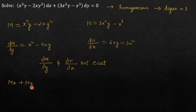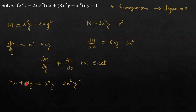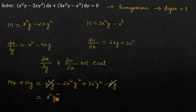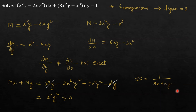For Rule 1, we first calculate mx + ny. Multiplying M by x gives x³y − 2x²y². Multiplying N by y gives 3x²y² − x³y. The x³y terms cancel, and after subtraction we get x²y². Since mx + ny = x²y² ≠ 0, the integrating factor is 1/(mx + ny). We need it to be nonzero because if it were zero, the integrating factor would go to infinity, which is not acceptable.